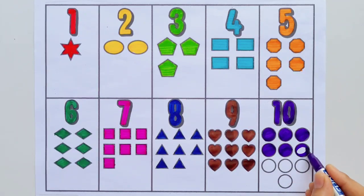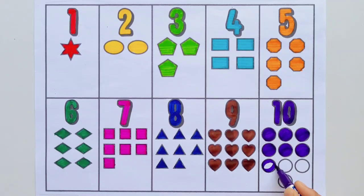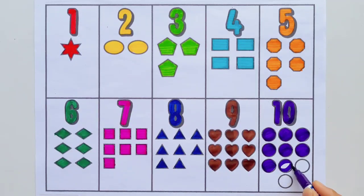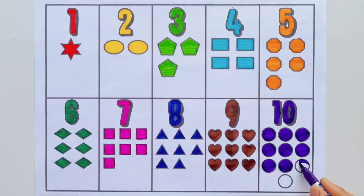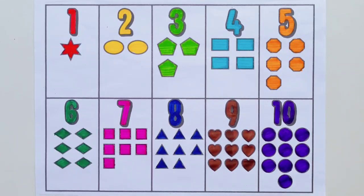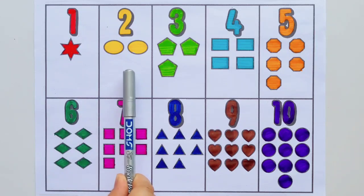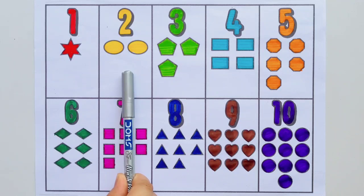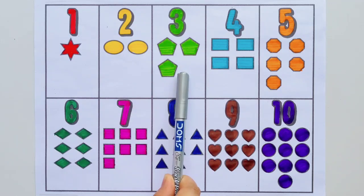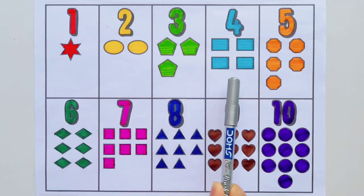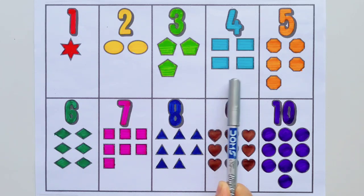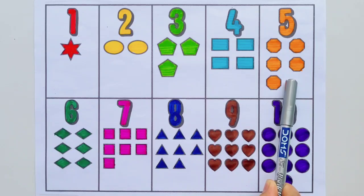Six, seven, eight, nine, ten. Ten circles. Let's revise. One star, two ovals, three pentagons, four rectangles, five octagons.